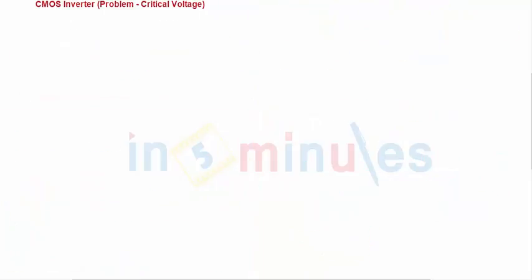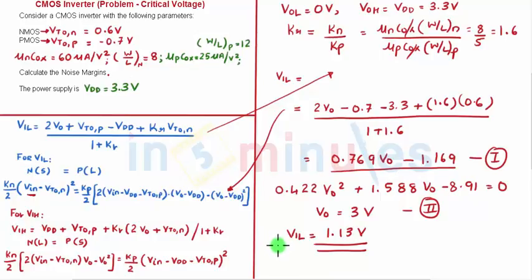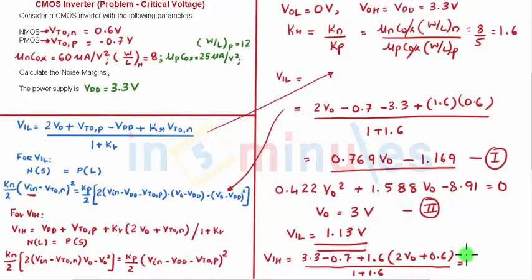Similarly let's go ahead and see VIH as well. So for VIH again the formula is written here on the screen: VDD which is given as 3.3, VTP minus 0.7, KR 1.6, twice V out plus VTN which is nothing but 0.6 upon 1 plus KR which is nothing but 1 plus 1.6. It will also give me an equation in terms of V out.